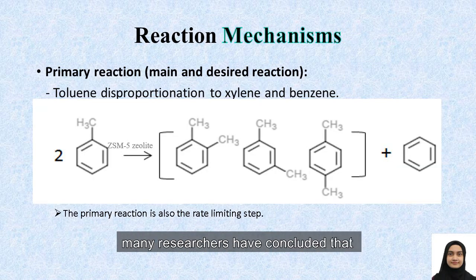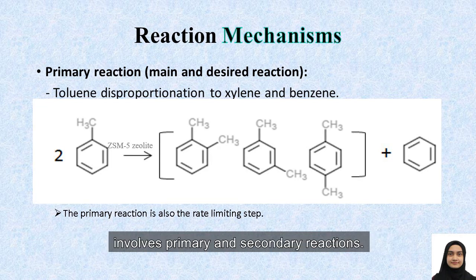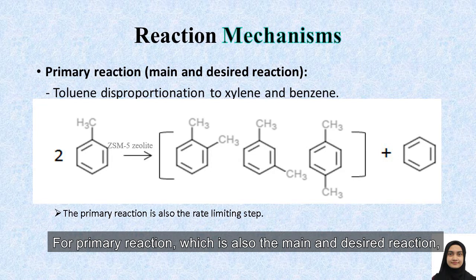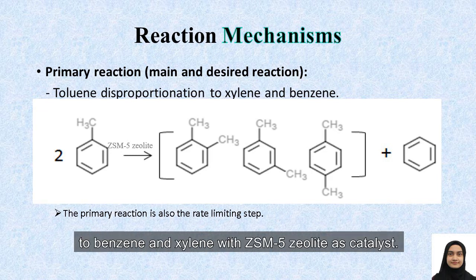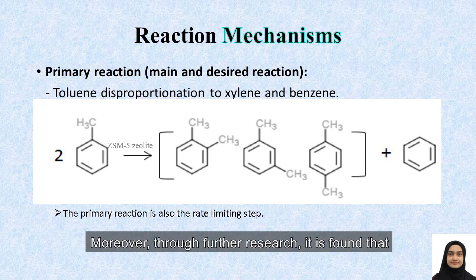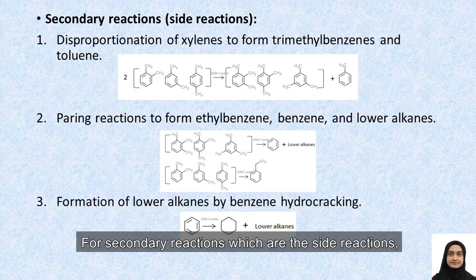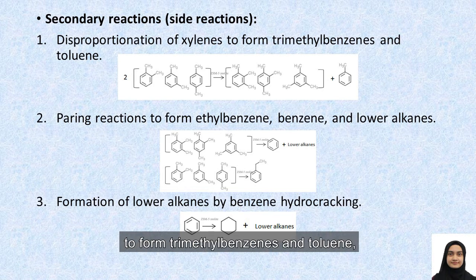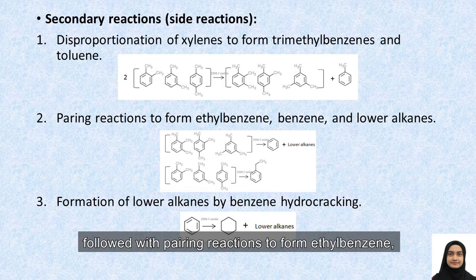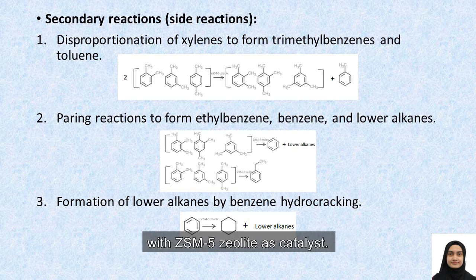For reaction mechanisms, many researchers have concluded that toluene disproportionation over ZSM-5 zeolite catalyst involves primary and secondary reactions. For the primary reaction, which is also the main and desired reaction, the equation is shown here — the disproportionation of toluene to benzene and xylene with ZSM-5 zeolite catalyst. Through further research, it is found that this reaction is also the rate-limiting step. For secondary reactions, which are the side reactions, there are three different reactions: the first is disproportionation of xylene to form trimethylbenzene and toluene; the second is cracking reactions to form ethylbenzene, benzene, and lower alkanes; and lastly, the formation of lower alkanes by benzene hydrocracking. All these reactions also take place with ZSM-5 zeolite catalyst.